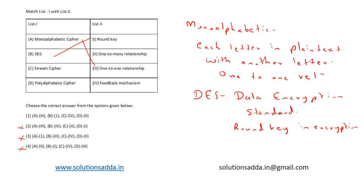Let's look at the other options. Stream cipher encrypts data one bit or byte at a time, and they often use a feedback mechanism. So C can be mapped to option four — stream cipher uses a feedback mechanism.